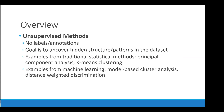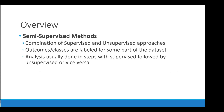Unsupervised methods are when there are no labels or annotations and the goal is to uncover hidden structure or patterns. Examples from traditional statistical methods include principal components or k-means clustering; from machine learning, model-based cluster analysis or distance-weighted discrimination. Semi-supervised methods are a combination of supervised and unsupervised approaches — outcomes are labeled for some part of the data set and the analysis is usually done in steps.